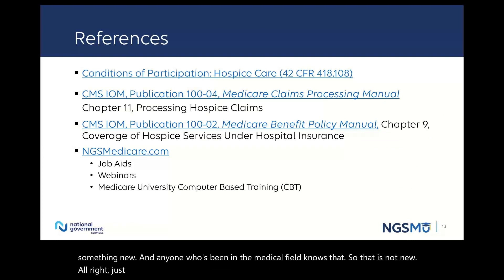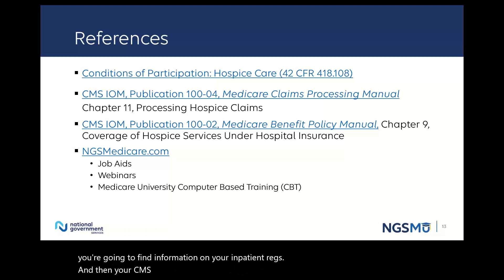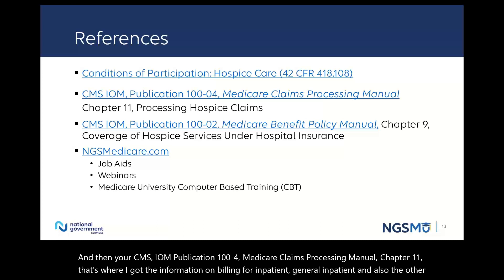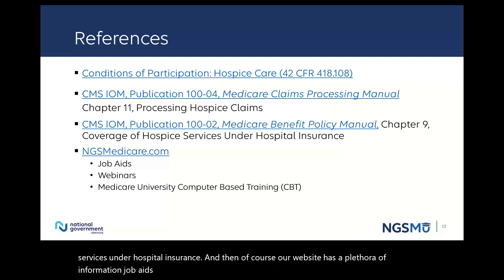Just quickly, references. COPs — hospice care, specifically 42 CFR 418.108 — is where you're going to find information on your inpatient regs. And then your CMS IOM Publication 100-4, Medicare Claims Processing Manual, Chapter 11 — that's where the information on billing for general inpatient and the other levels of care comes from. And then your Medicare Benefit Policy Manual, Chapter 9, coverage of hospice services under hospital insurance. Our website has a plethora of information, job aids, webinars, and computer-based training.